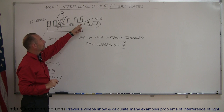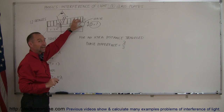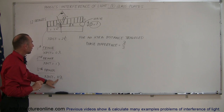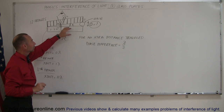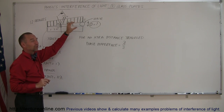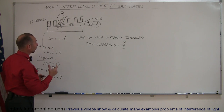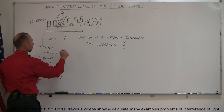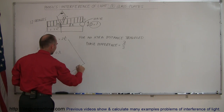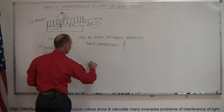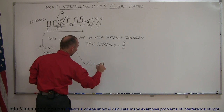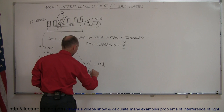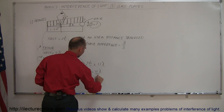Which means at the 12th fringe — right exactly where the hair is — the extra distance traveled is 11 lambda, and that has to equal twice the thickness of the gap, which equals the diameter of the hair. So we combine these together and say that twice the thickness of the air gap equals 11 lambda. Therefore the thickness is equal to 11 lambda divided by 2.